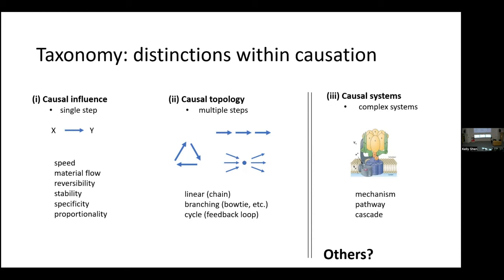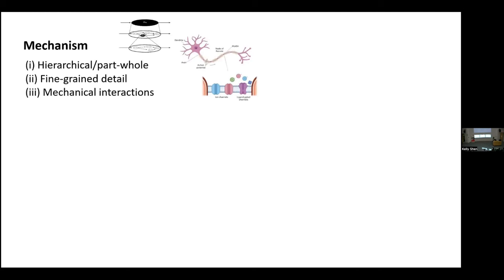In philosophy of neuroscience, the biggest causal concept in town is mechanism. The dominant view of how explanations work in neuroscience is that they are mechanistic — dominant since 2000, with the key paper still the most cited paper in one of the top journals in the field. According to a large majority of philosophers of neuroscience, explanation in neuroscience involves citing mechanisms, a kind of causal structure.